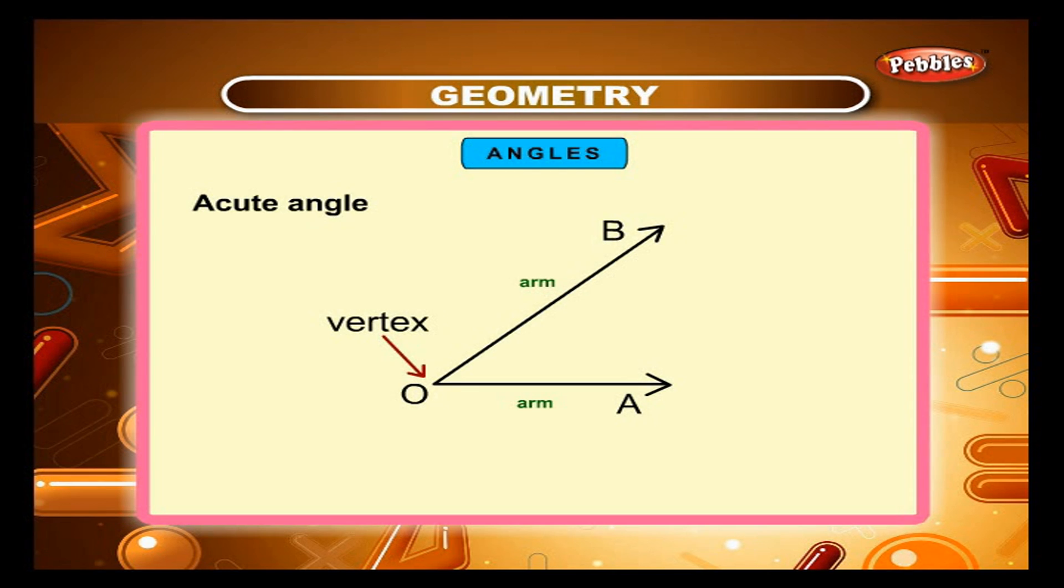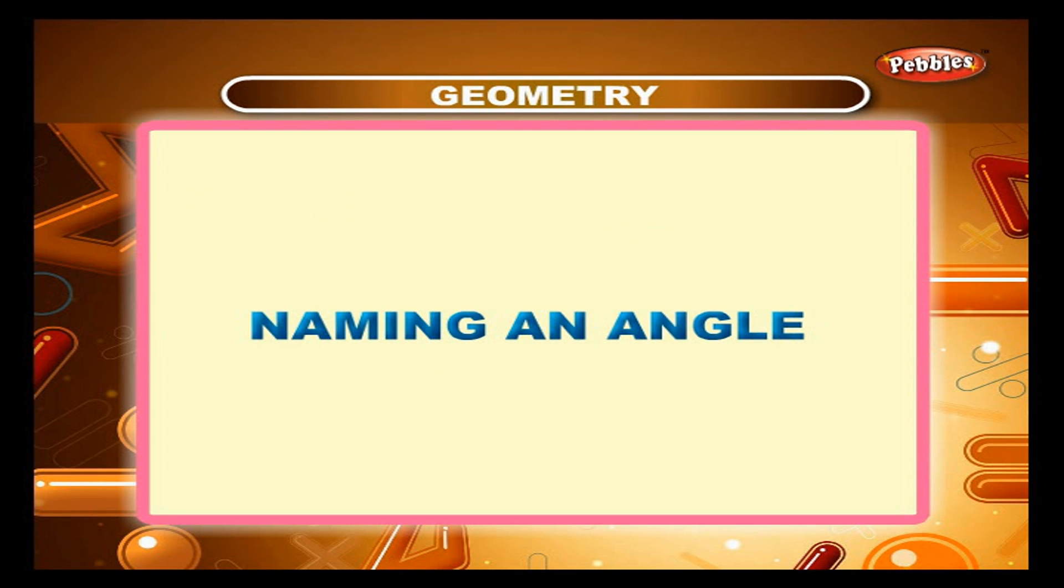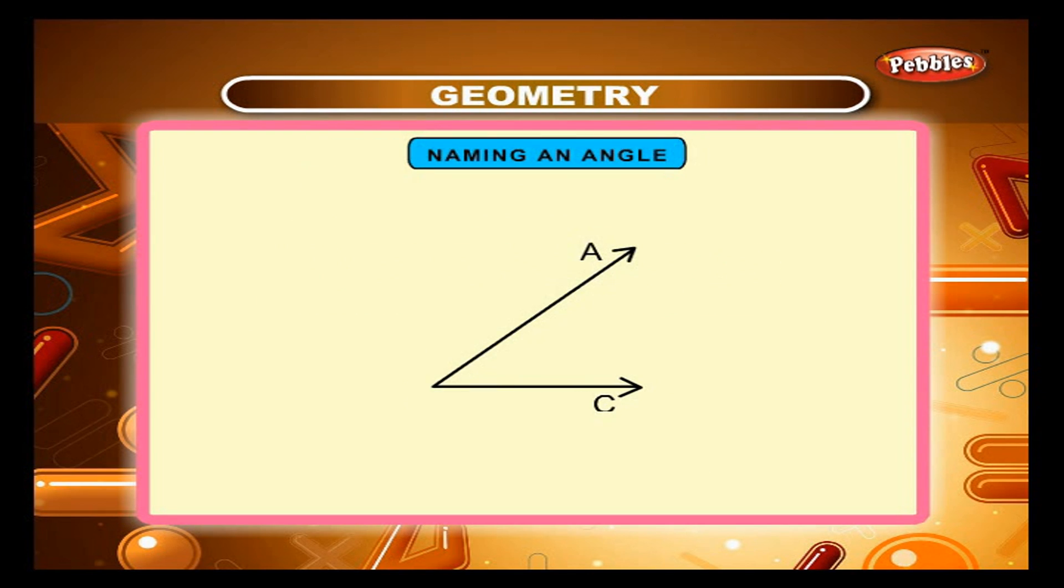This angle has vertex O and arms OB and OA. Naming an angle. An angle has one vertex and two arms. Let us now name an angle. This angle is called angle ABC. It can also be named angle CBA. This symbol represents the word angle.